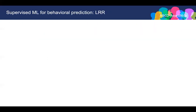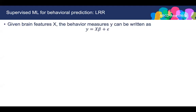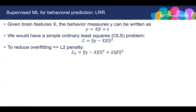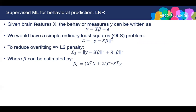I will first explain linear ridge regression. Given the brain features X, the behavior Y can be written as a linear combination of brain features. This problem can be formulated as an ordinary least squares problem. To reduce overfitting, we normally introduce the L2 penalty. The parameter beta can be estimated by this equation.